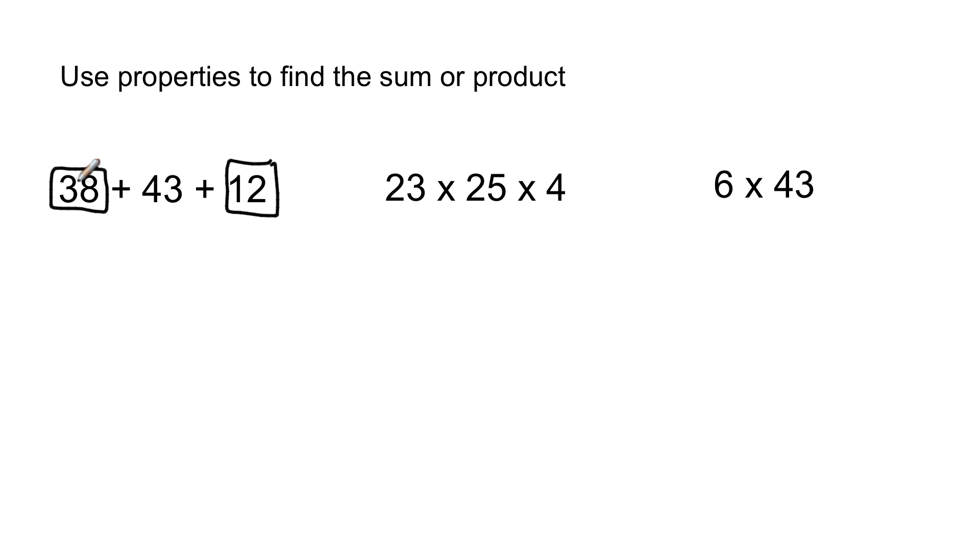So when those things happen, it's much easier to do that mentally than 38 plus 43. Then you have to start regrouping in your head. And you have to remember what's in the ones place and so on. So this adding out of order, that's the commutative property.